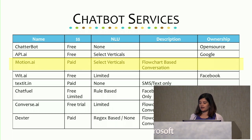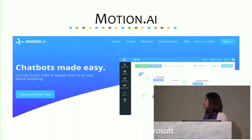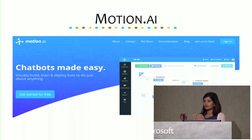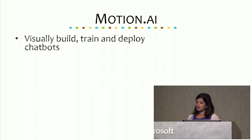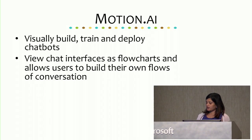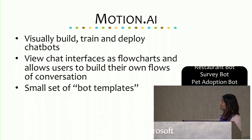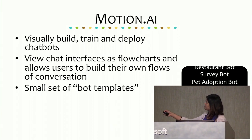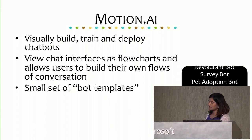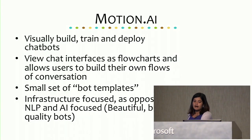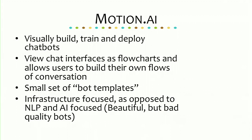The next thing is Motion.ai — a flowchart-based system where you can build a flowchart of conversations. It converses based on how you've designed your flowchart. They are focused on visually building, training, and deploying chatbots, and they view chat interfaces as flowcharts. They have bot templates like a restaurant bot, survey bot, and pet adoption bot. It's a little more complicated than the previous one, significantly focused on infrastructure, with not a lot of NLP or machine learning. You might have to take the core science piece outside and use Motion.ai for infrastructure to create beautiful bots.